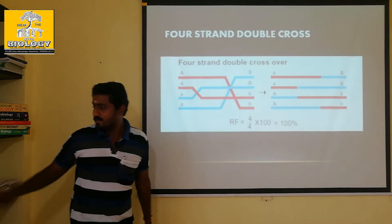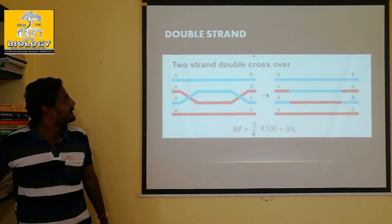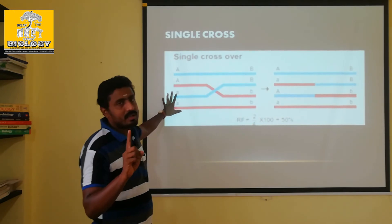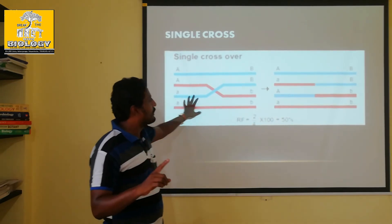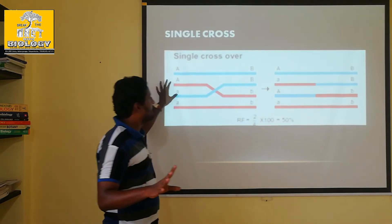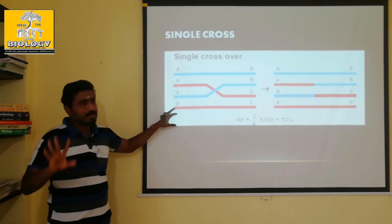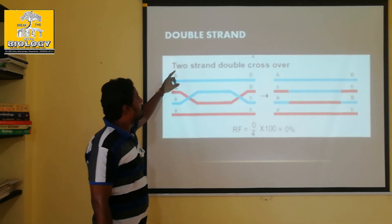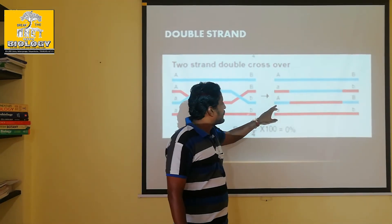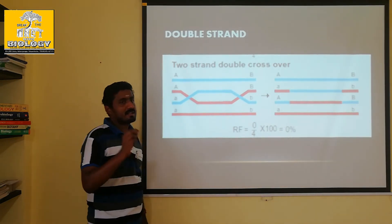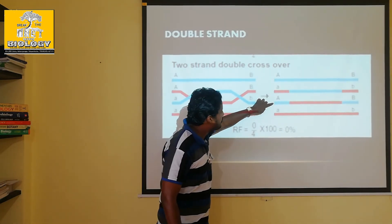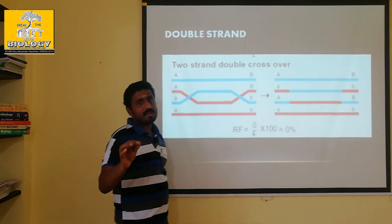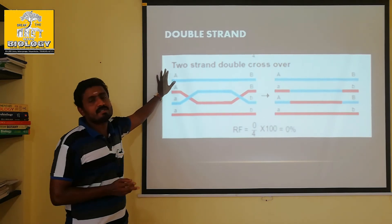Now I will talk about this. What do we know about this strand? You can see here — this is one strand, and the other one is crossing over. This is one single strand and the other one is crossing over. The two are just like this, and the parental character is just like this. Two strand double crossing over — the two strands are placed here, so the name is two strand double crossing over.